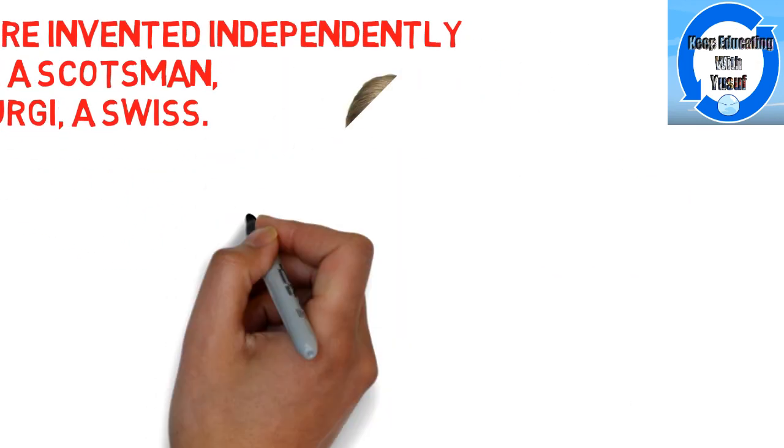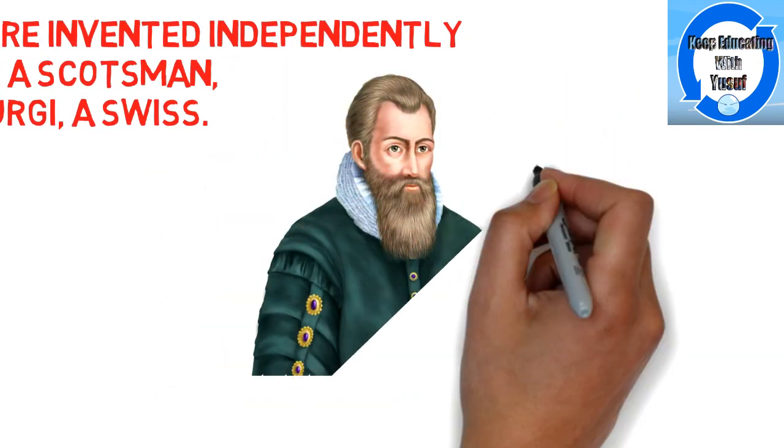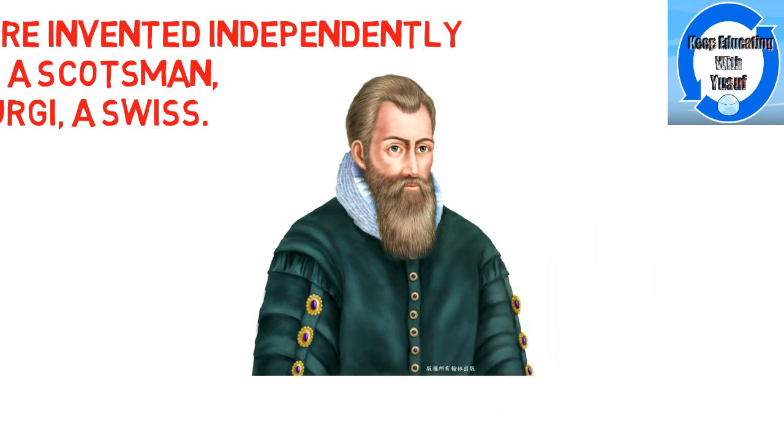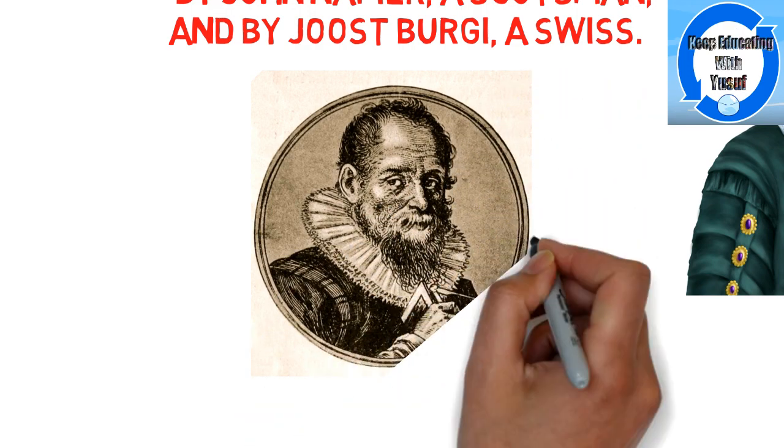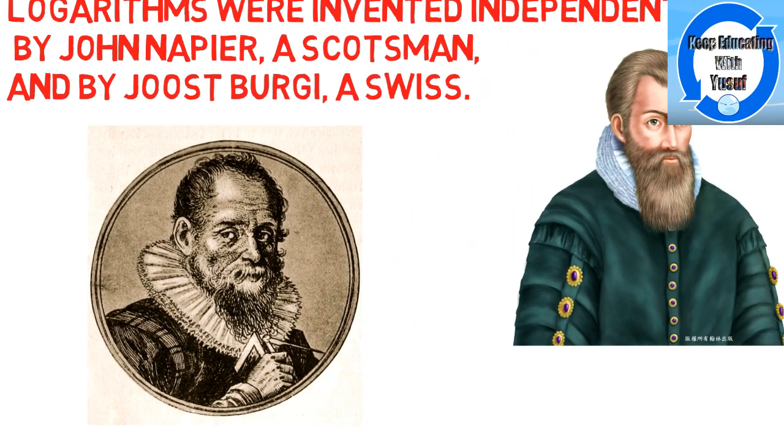This is a picture of John Napier while another one is of Jost Bürgi, the mathematician who invented logarithms. You can read more about them on the internet.